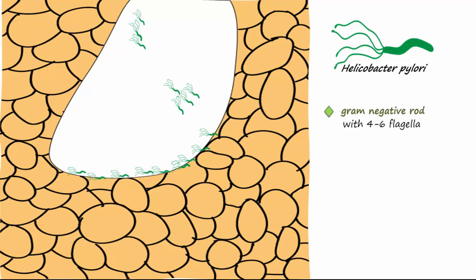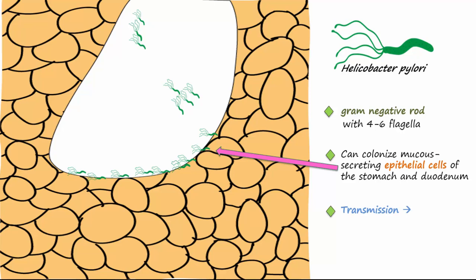The flagella allow it to propel through the mucus of the GI tract. It infects the mucus secreting cells of the stomach and duodenum. Transmission is believed to be from person to person by saliva or by water or food that has been contaminated by feces.